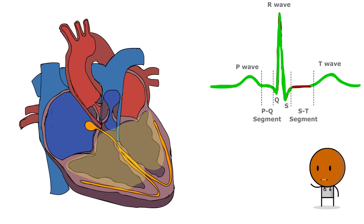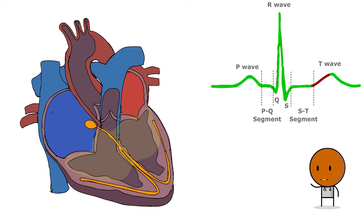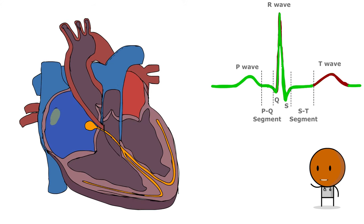The ST segment on the EKG mirrors the ventricle's sustained depolarization state, which occurs right before they contract and eject blood. The T wave on the EKG represents the ventricle's resetting electrically right before they relax, a phase known as ventricular diastole.